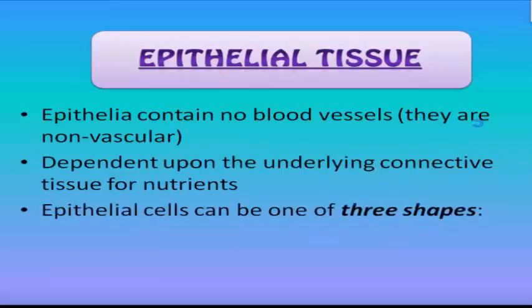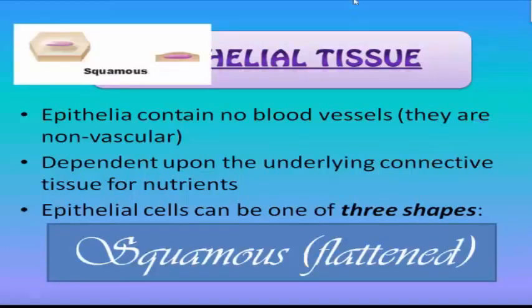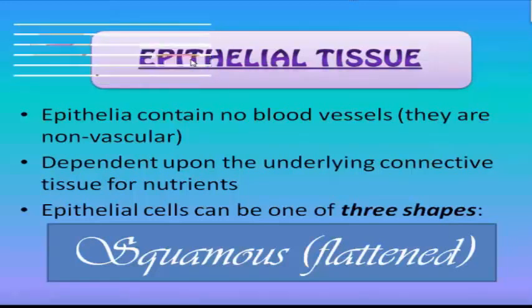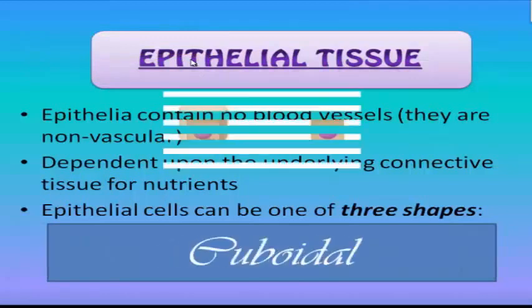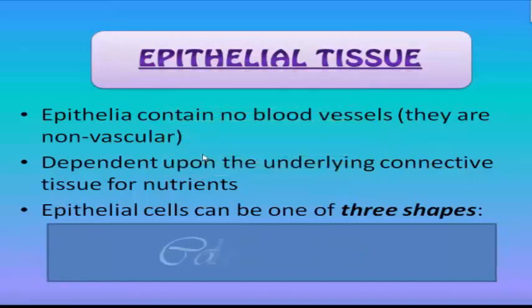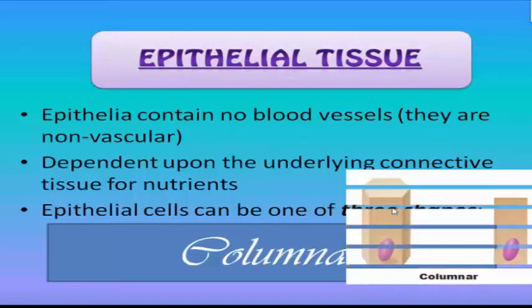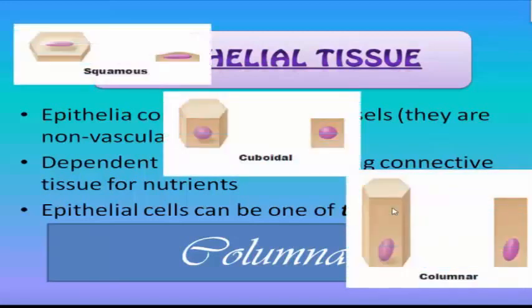We have three shapes of epithelial cells. The first is squamous, or flattened — as you can see in the image, this is a flattened cell. The second is cuboidal — from the word cube or square, we have a square-shaped cell. The third is columnar — from the word column, this is a rectangular, upright shape. So again, we have squamous, cuboidal, and columnar.